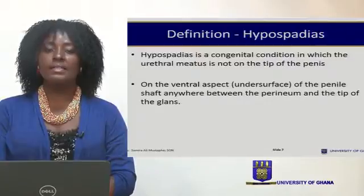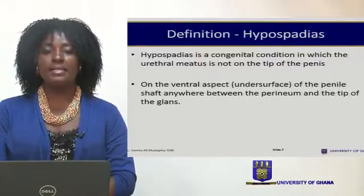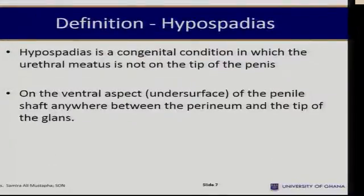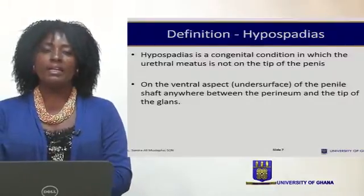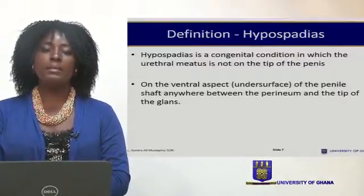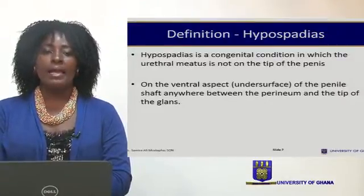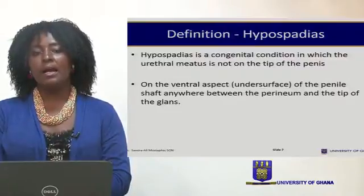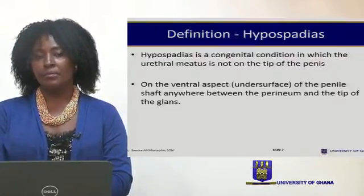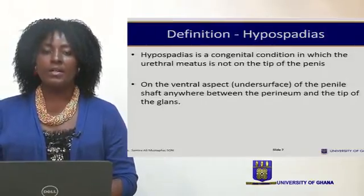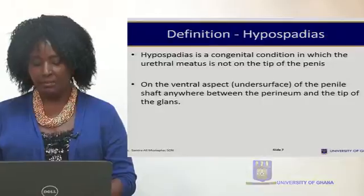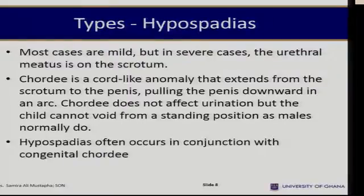Hypospadias is the congenital condition in which the urethral meatus is not on the tip of the penis but on the ventral aspect — that is, the undersurface of the penis or the shaft of the penis, or anywhere between the perineum to the tip of the glans of the penis. The opening ranges from anywhere beneath the glans down to the perineum. It is the location of the urethral meatus on the ventral aspect that gives us this definition.